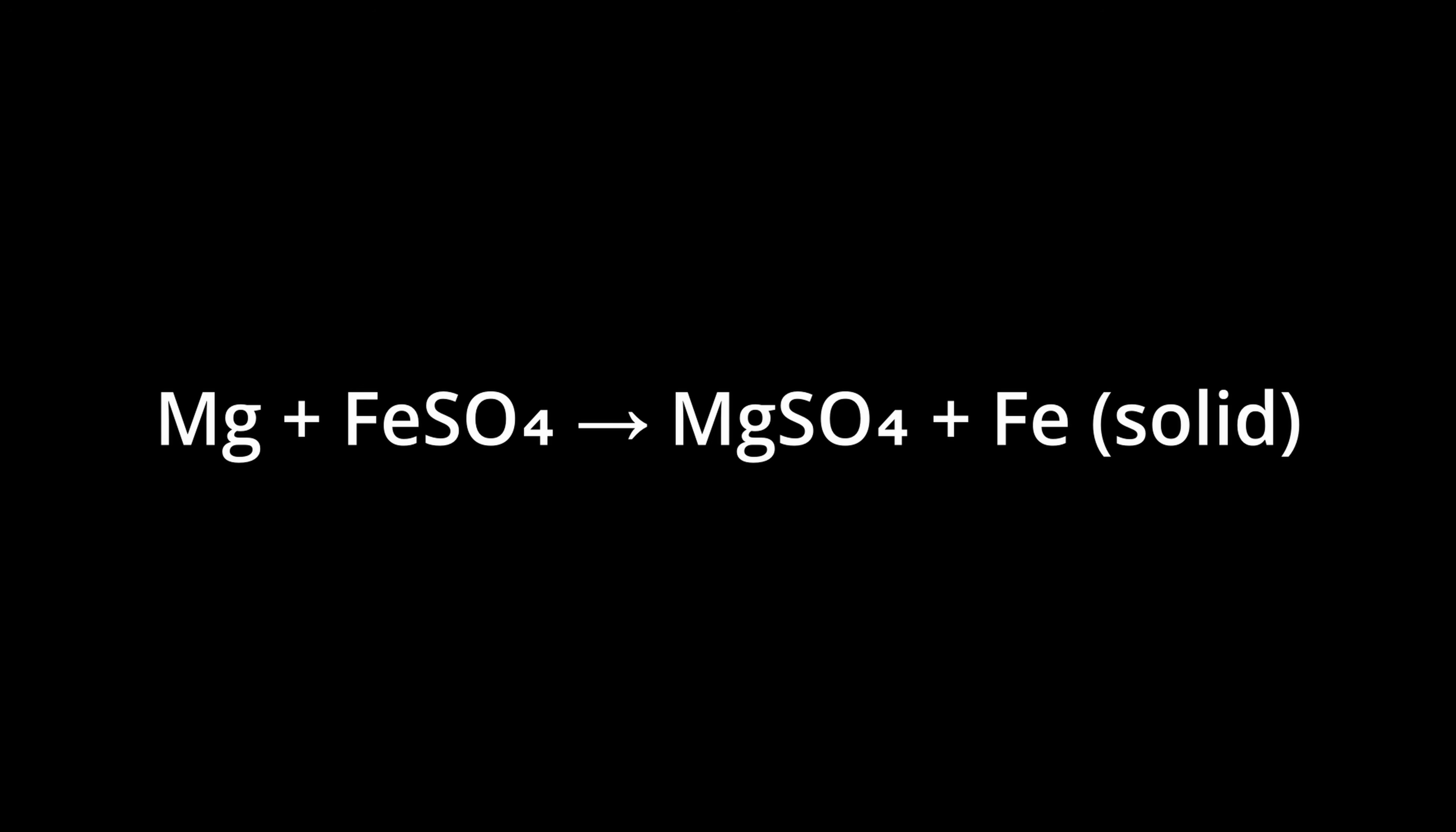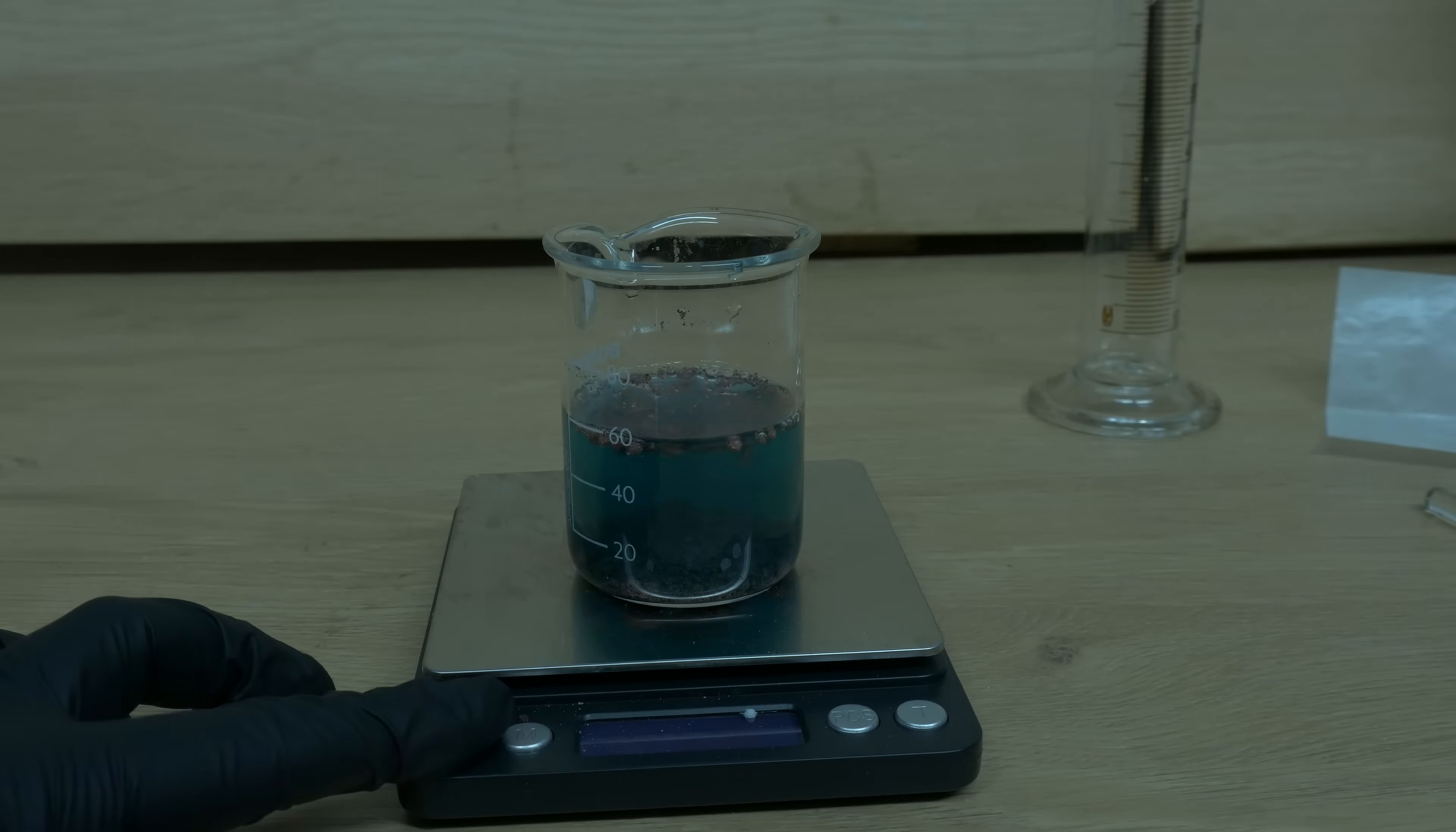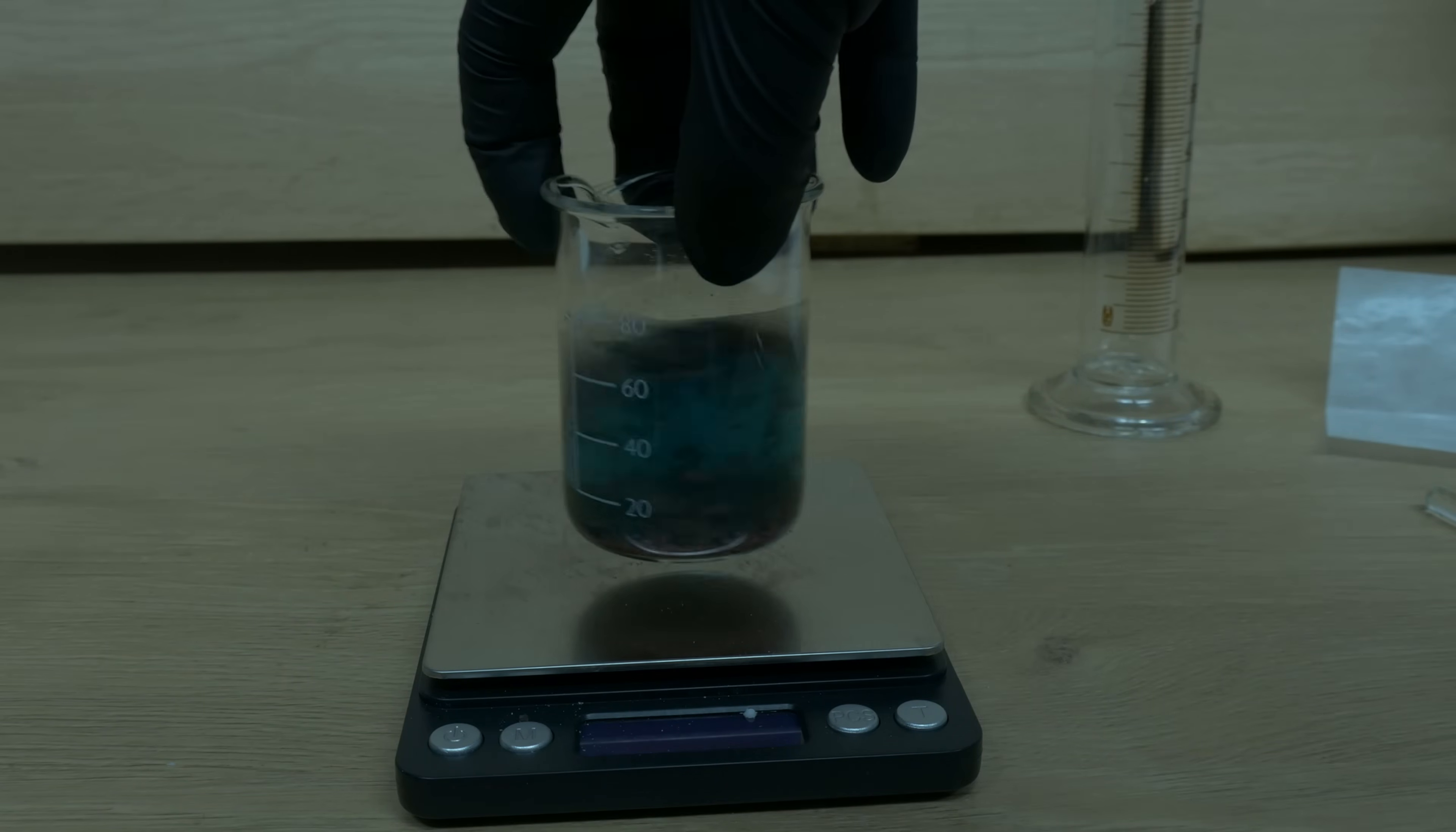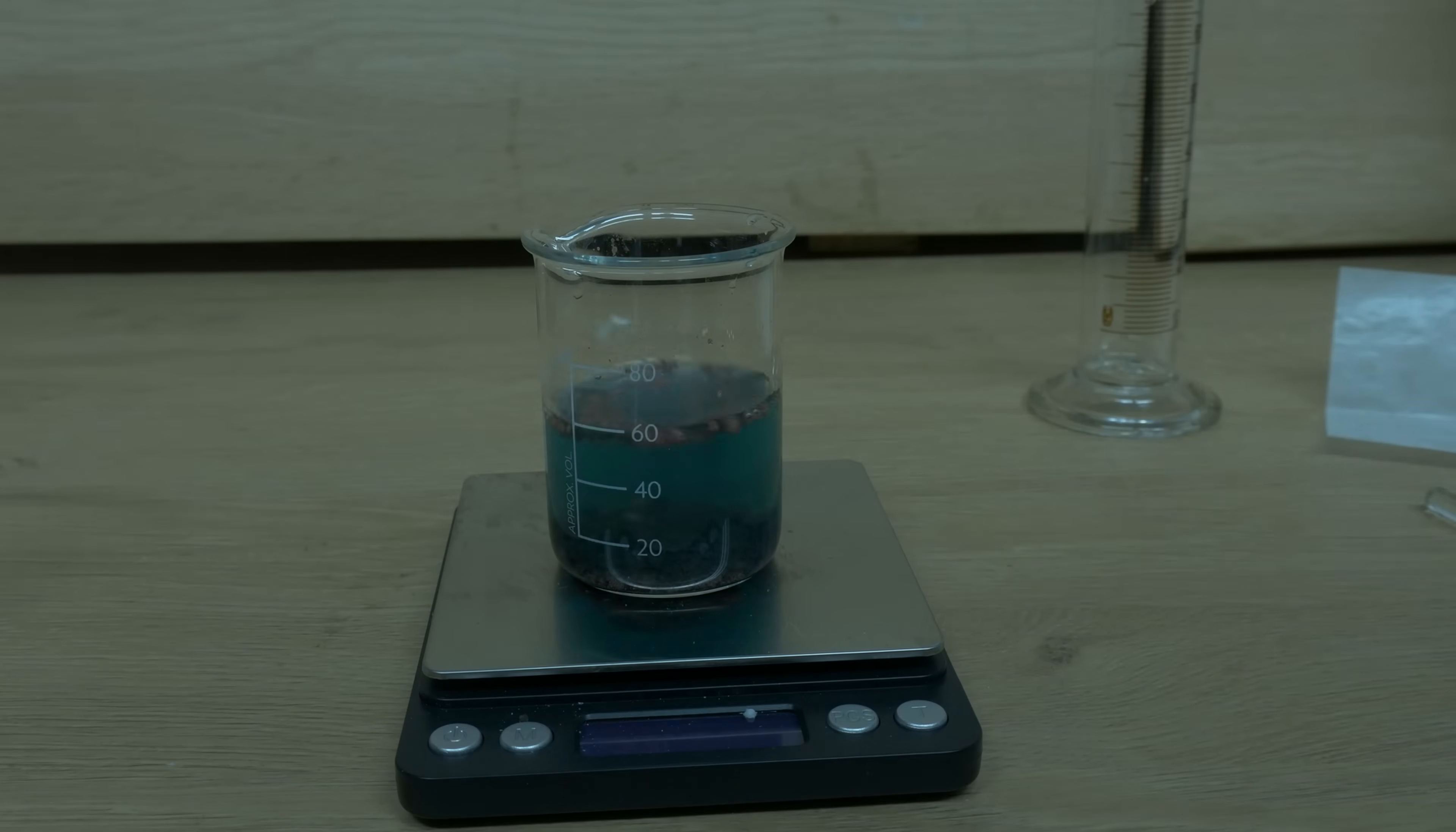In plain English, that means that magnesium basically says, Hey, iron, I want your sulfate partner. You take a hike and go metal. And iron goes, sure thing, and plates out as a metal onto the magnesium. The result, the magnesium gets coated into tiny bits of iron metal. That iron should be magnetic. So even though the magnesium itself hasn't become magnetic internally, it's now wearing a coat of ferromagnetic iron. From the outside, it might behave as if magnesium has turned magnetic. Time to test this experimentally and see if the reality matches the theory.